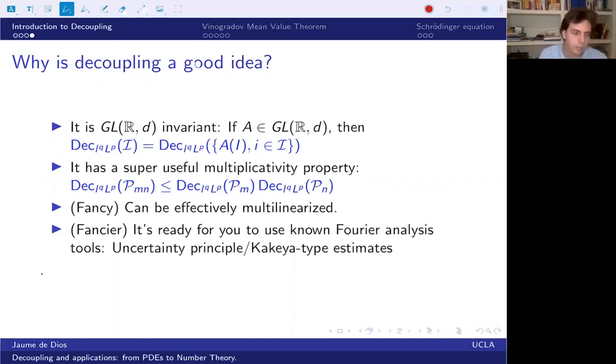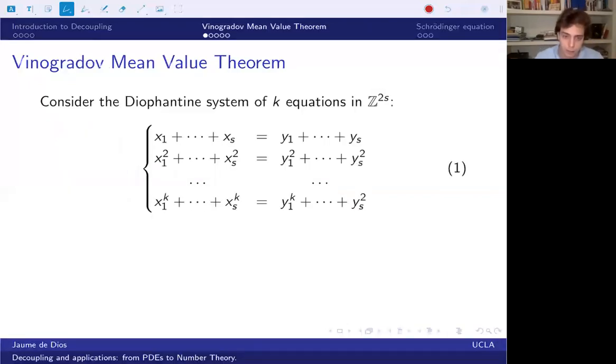So now that I've tried to sell you the decoupling estimates, I'm actually going to do some applications. And that's what we're going to spend most of our time. So our first application will be to number theory. Let's look at this system of equations. It's a system of equations in two s variables, and we have k equations. And one may wonder, there's one very easy solution, which is x1 equals to x2 equals to xs equals to y1, y2, ys. So there are infinitely many solutions.